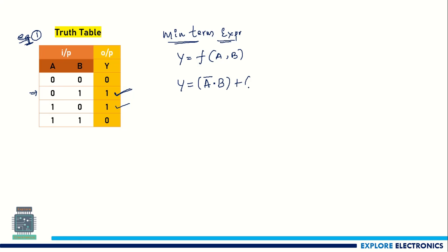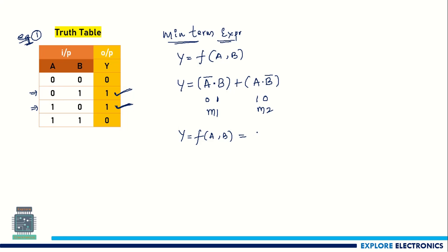So this is one term, plus we have one more 1 in the output. To consider this, the inputs are 1 and 0. So for 1, I write it as a, and in place of 0 I write it as b-bar. So this gives us a times b-bar. This is the switching expression for this truth table. To convert this into the min term expression by decoding: a-bar means 0 and b is 1, so that is m1. Similarly, a means 1 and b-bar means 0, so that is m2.